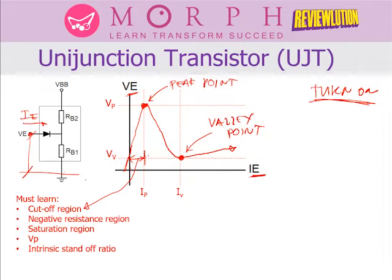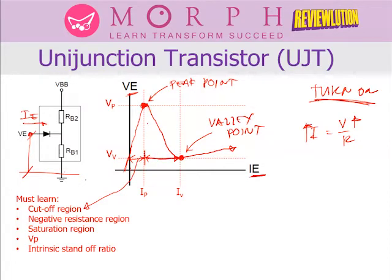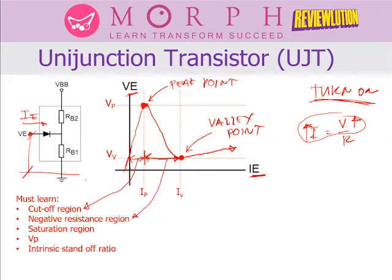From the peak point towards the valley point, there is a current increase while the voltage decreases. Normally we know that as voltage increases, current increases — they are directly related. But here they are inversely related: as current increases on the x-axis, voltage drops on the y-axis. When there is an inverse relationship between voltage and current, we call this phenomenon negative resistance. So the period from IP (peak current) to IV (valley current) is called the negative resistance region of the UJT.